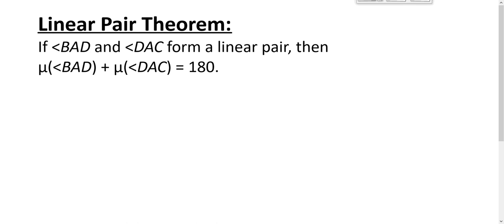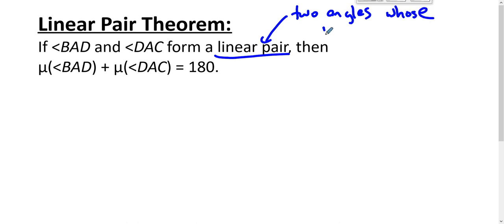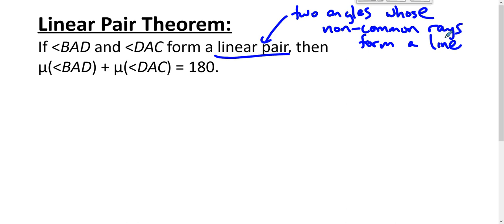Let's talk about a couple of theorems in this screencast. Let's talk about the linear pair theorem. We mean that these are two angles whose non-common rays form a line. That's what we mean by a linear pair — it's two angles, and their non-common rays form a line.